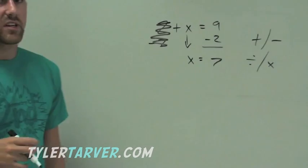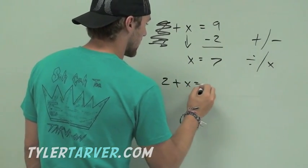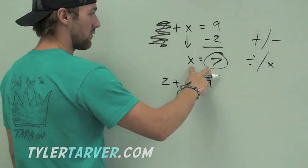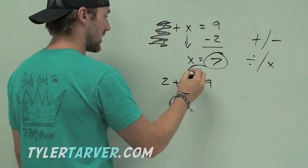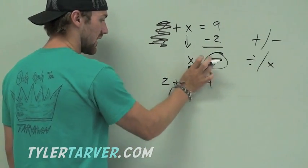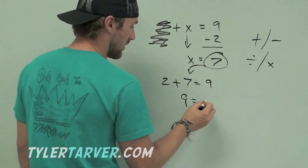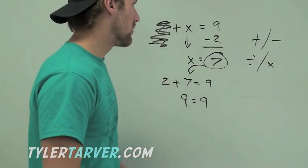So here's the wonderful thing about these. You can always check your answers. Our original problem was 2 plus x equals 9. To check it, we just plug in what we said x was. If we're saying x is equal to this, it's the same thing. So we just take out that, put in 7. 2 plus 7 is 9. Does 9 equal 9? Why, yes, it does. So good deal. Move on.